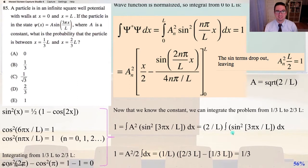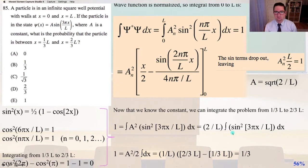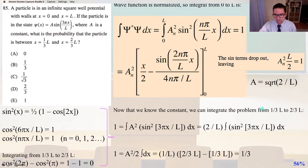Problem 85: a particle is in an infinite square well potential with walls at x equals 0 and x equals l. If the particle is in the state psi(x) equals A sin(3 pi x over l), where A is a constant, what is the probability that the particle is between x equals 1/3 l and x equals 2/3 l? The wave function is normalized through the integral from 0 to l, and A equals the square root of 2 divided by l.